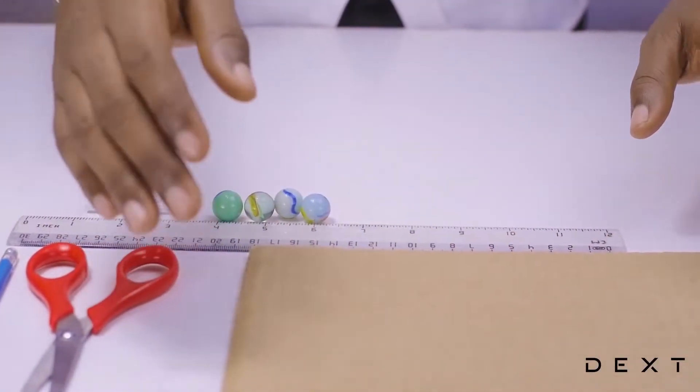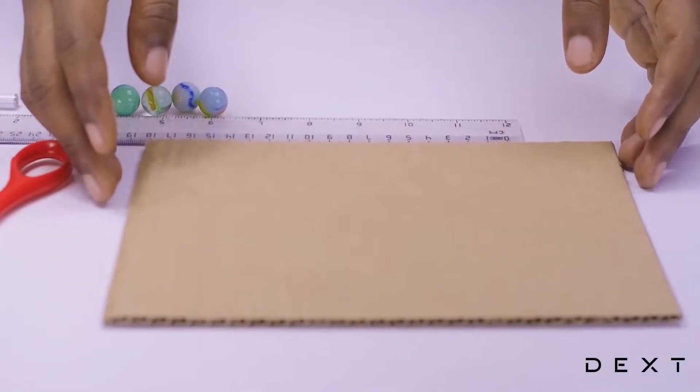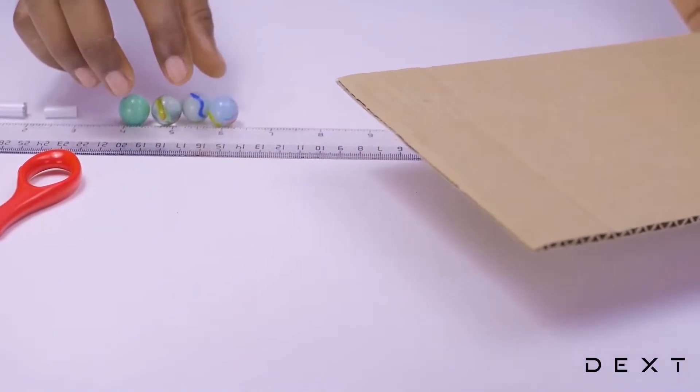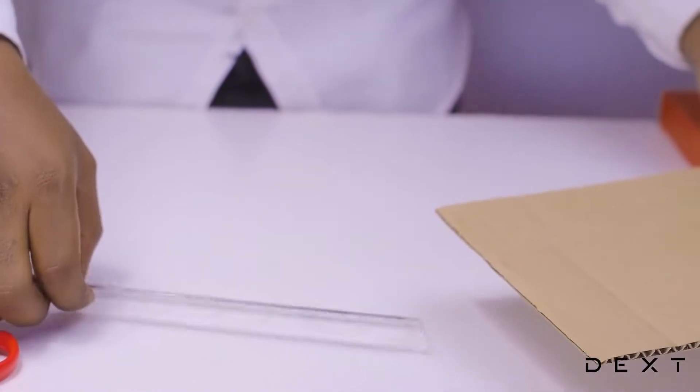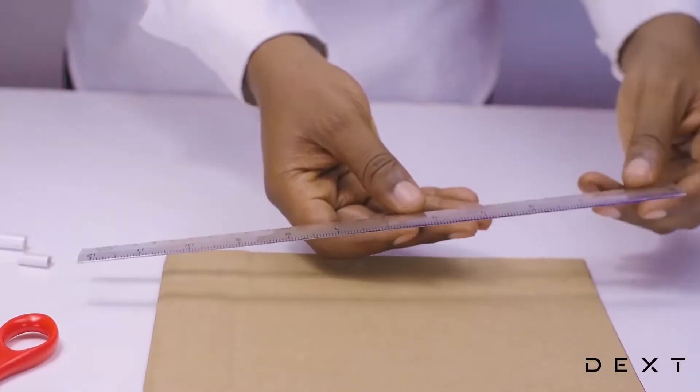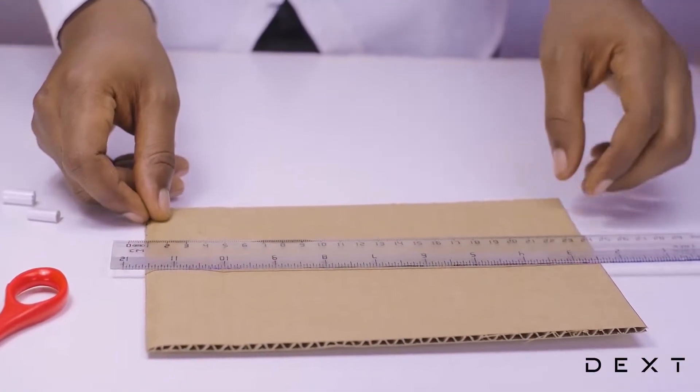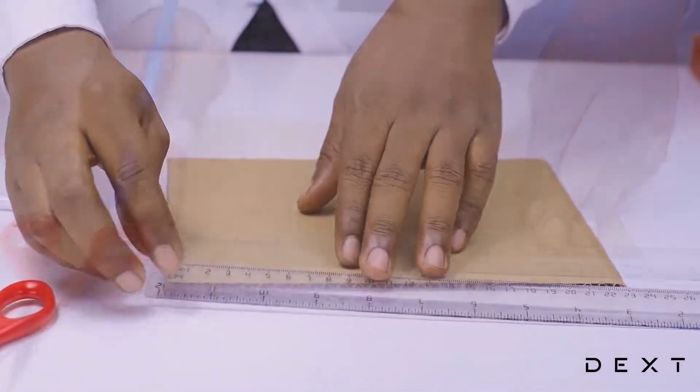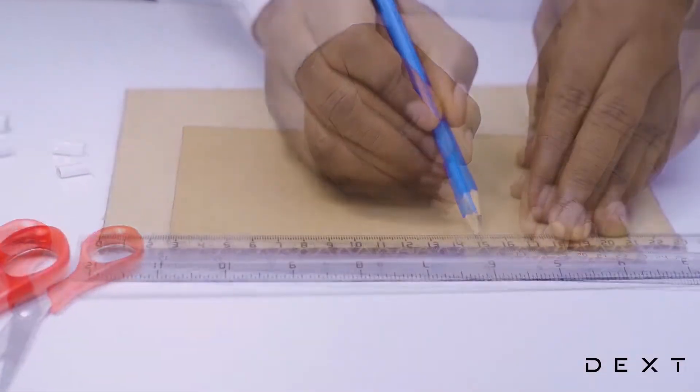So the first thing we'll do will be to cut up our corrugated cardboard into the specific dimensions we need. We are going to create a rectangle of size 15 cm by 7 cm.